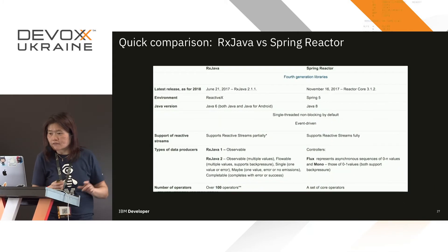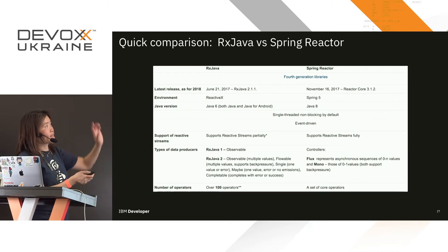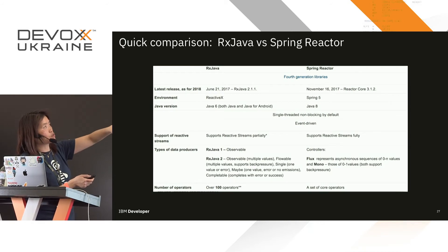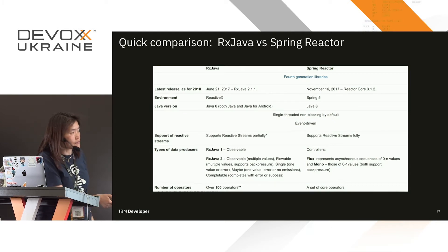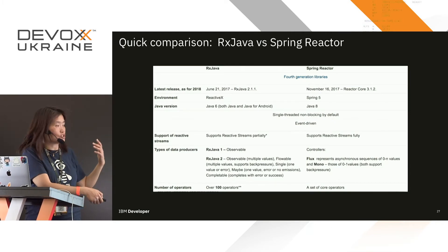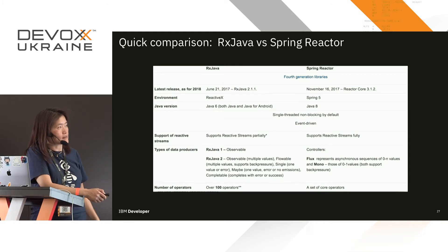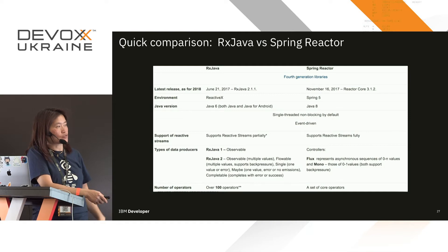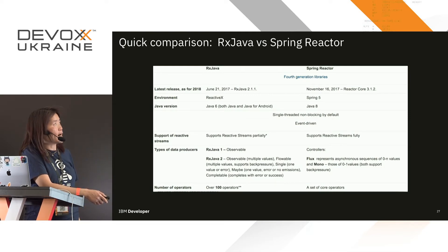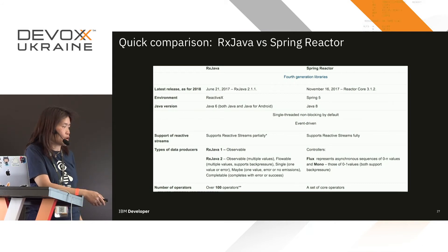Quick comparison between RxJava and Spring Reactor: Spring Reactor is newer and supports Java 8. Both are event-driven and support Reactive Streams. Spring Reactor fully supports Reactive Streams. For RxJava, use version 2 for back pressure and Reactive Streams support.